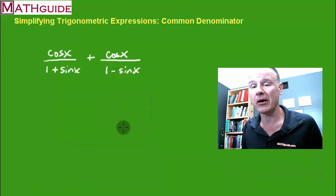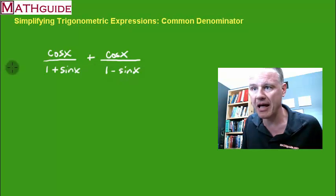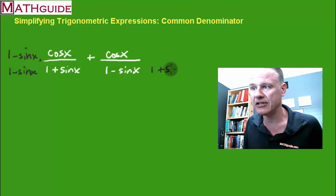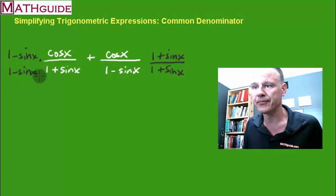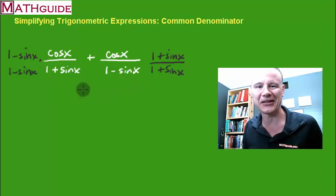If you know anything about getting a common denominator, what you do — since we have two different denominators — is recognize that this denominator is missing this factor. So I'm going to multiply the top and bottom by (1 minus sine of x). For the same reason, this denominator is missing a factor of (1 plus sine of x), so I'm going to multiply the top and bottom of this fraction by (1 plus sine of x). In doing so, both ratios will share a common denominator.